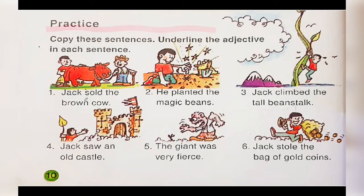Number one: 'Jack sold the brown cow.' The word 'Jack' is a noun, 'sold' is a verb, 'cow' is a noun. What kind of cow did he sell? A brown cow. The word 'brown' describes the color of the noun 'cow', so 'brown' is an adjective.